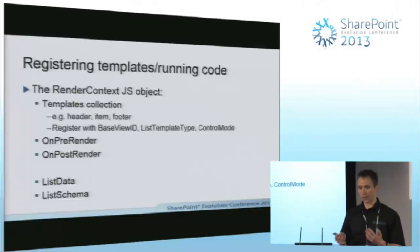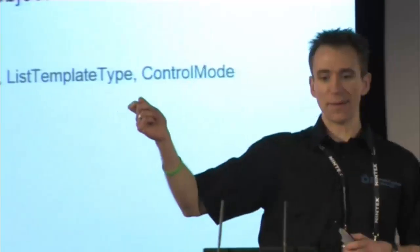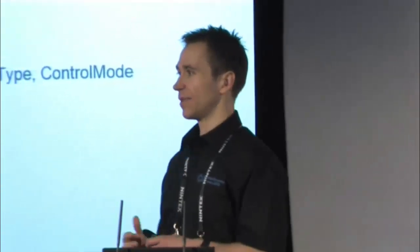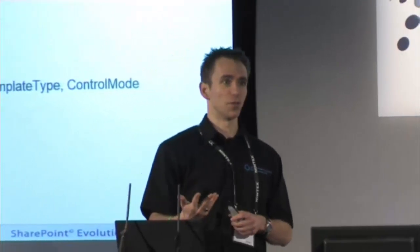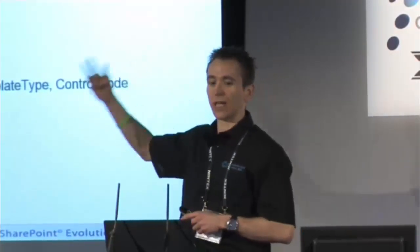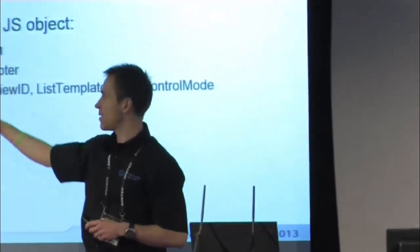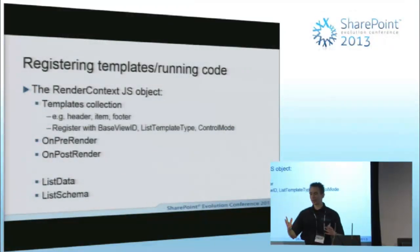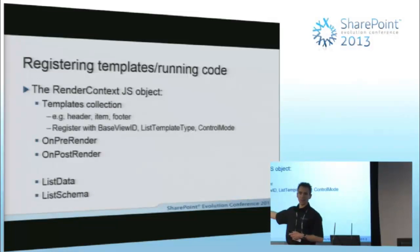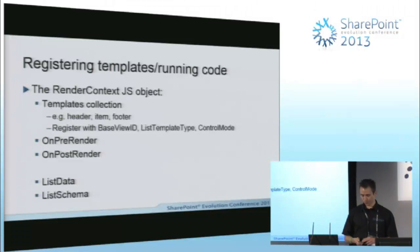We register these things when working with lists on three hooks: the base view ID, the list template type, and the control mode. Base view ID could be one for all items, three for Explorer view. List template type would be the ID of the list — you might be accustomed to starting custom list IDs from 10,000 upwards. Control mode could be display, edit, and so on. We can also run some code before the list gets rendered, run jQuery after it's rendered, and use the list data and schema properties for quite advanced scenarios.